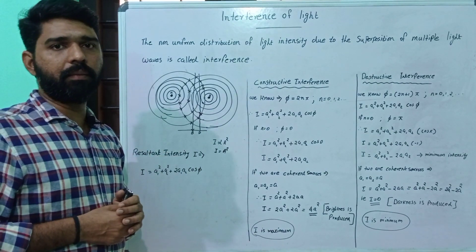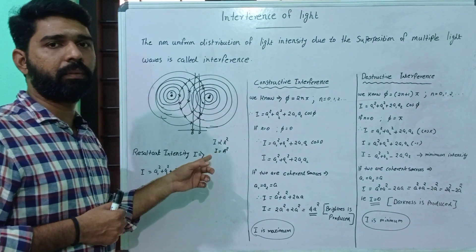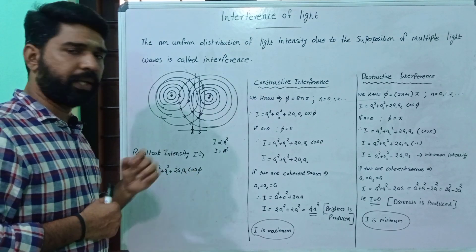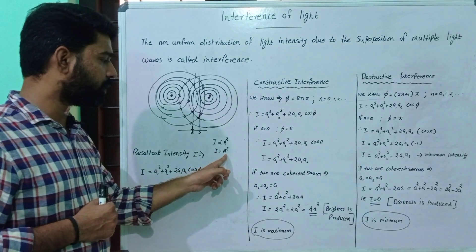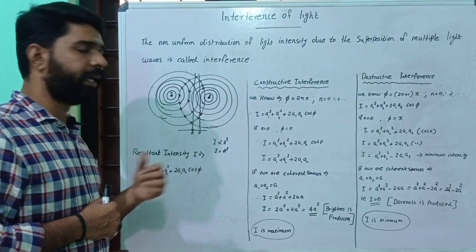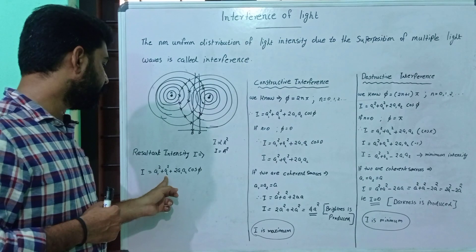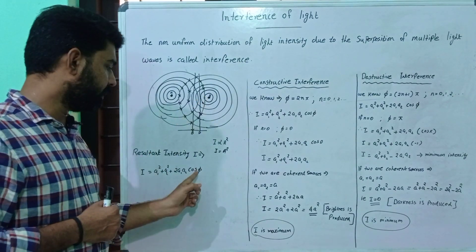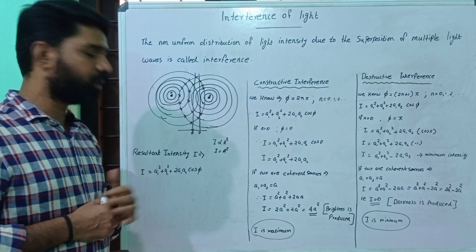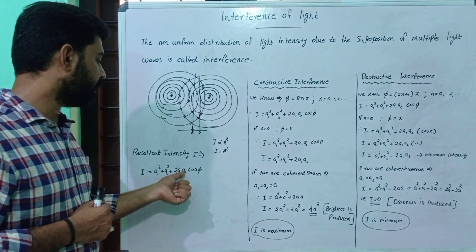We need to say the amplitude of the resultant wave. The square of the resultant amplitude is A1 squared plus A2 squared plus 2·A1·A2·cosφ. Therefore, intensity I is equal to A1 squared plus A2 squared plus 2·A1·A2·cosφ.